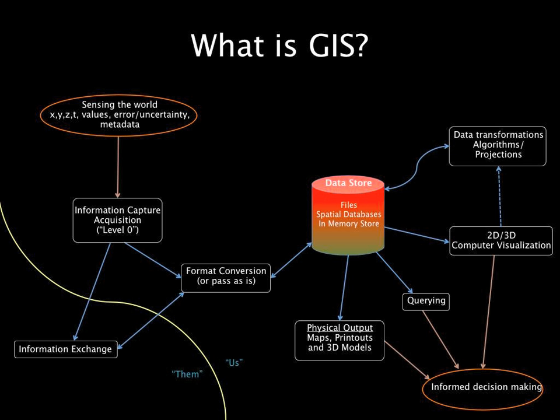Then we have an us-and-them mentality going on, where we're working with data and it's going off to other people, and maybe you get some stuff back from them. It goes possibly through some conversion and into your data store. From there, you do data transformations, apply algorithms, reprojections, all sorts of different things to manipulate your data. You do visualization - 2D map style, or 3D, or you can even turn it into audio. You can apply queries and you might even do physical output, like making a plastic model of a harbor. All of that leads into informed decision making.